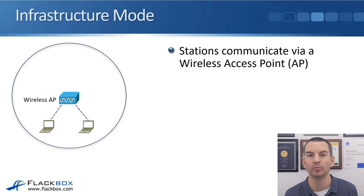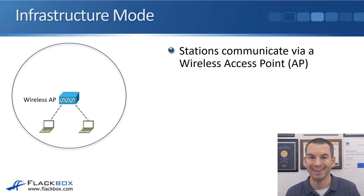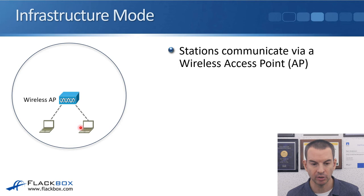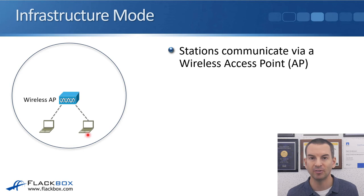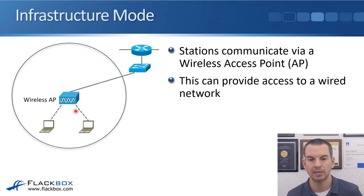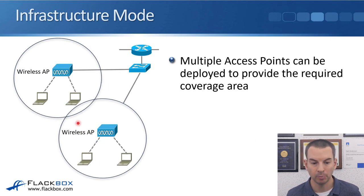This is where infrastructure mode comes in, which can solve that scalability issue. In infrastructure mode, rather than devices communicating directly with each other over wireless, they communicate via a wireless access point. When the two laptops are communicating with each other or anything else, they send frames to the wireless AP, and it's the wireless AP that forwards those frames on. The first reason this solves the scalability issue is that the wireless AP can be connected to the wired network, giving your wireless devices access to that entire wired network. Also, you can deploy multiple wireless access points to get coverage across the entire area you want.